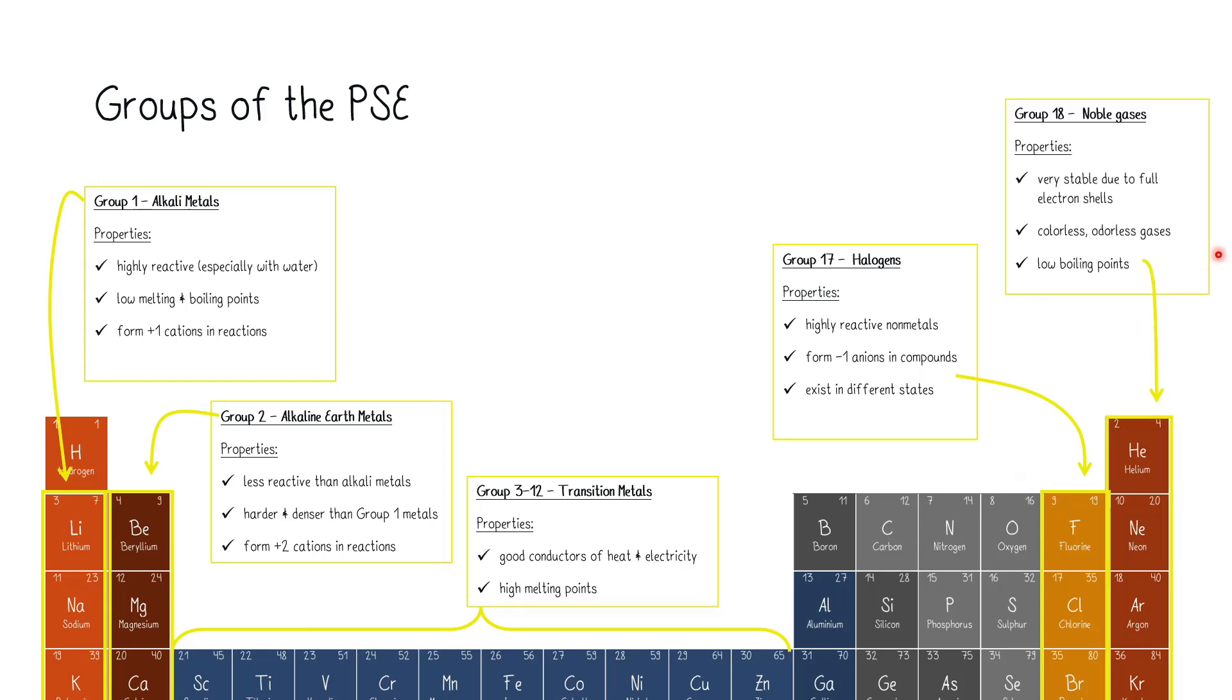And then over here, we have the group 18, the noble gases. They are very stable due to a thing they have called the full electron shells, fulfilling the octet rule. They are colorless, odorless gases, and have quite low boiling points. Also, what I want to mention is that these groups right here, like from boron, carbon, nitrogen, oxygen, all these groups, they are very diverse in their properties. So we won't focus on their properties as groups specifically.